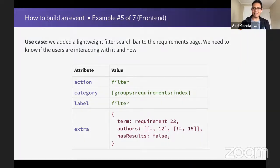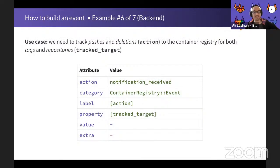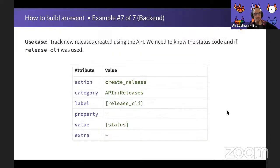Now some back-end examples. In this case, we need to track pushes and deletions to the container registry for both tags and repositories. The action is notification_received, category is container_registry_event, label is the action (push or delete), and property is track_target (tag or repository). In a second example, we track new releases created via the API, needing the status code and whether release CLI was used. The action is create_release, category is API_releases, label indicates whether release CLI was used, and value holds the status code — keep in mind value is a number, so status would be something like 200.